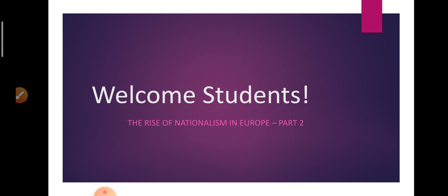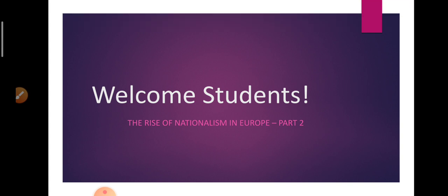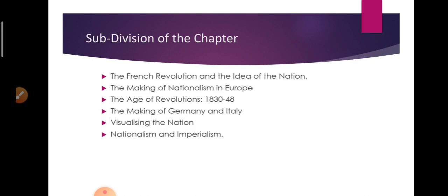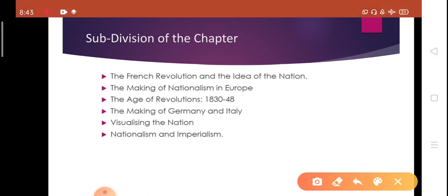In the last class, we saw changes that happened during the French Revolution — how did the French Revolution lead to the idea of a nation. Today, we are going to start with the next part of the chapter that talks about the making of nationalism in Europe.